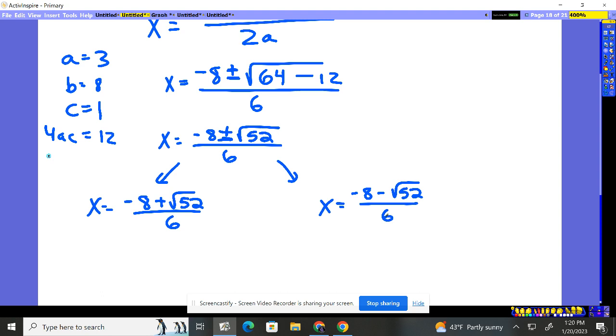So now I'll go ahead and I'll take my calculator. I'll type in negative 8 plus square root of 52. It gives me, like, negative point sum, and I then divide by 6. When I did it earlier, I got about negative 0.1.